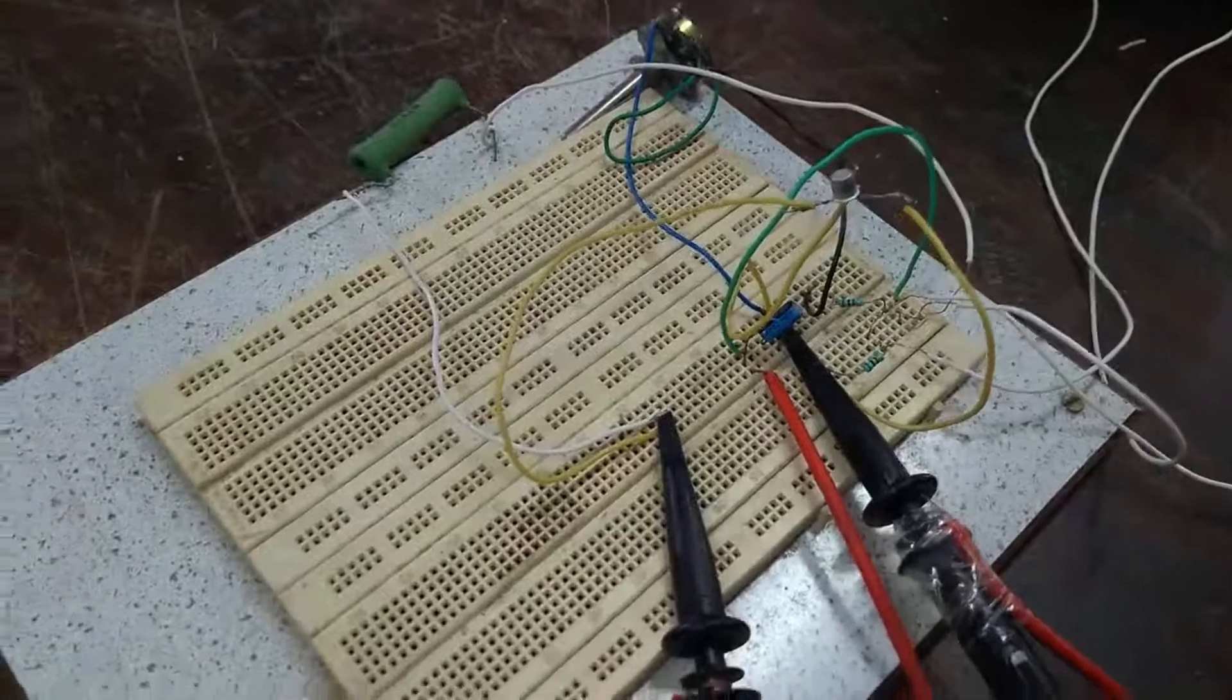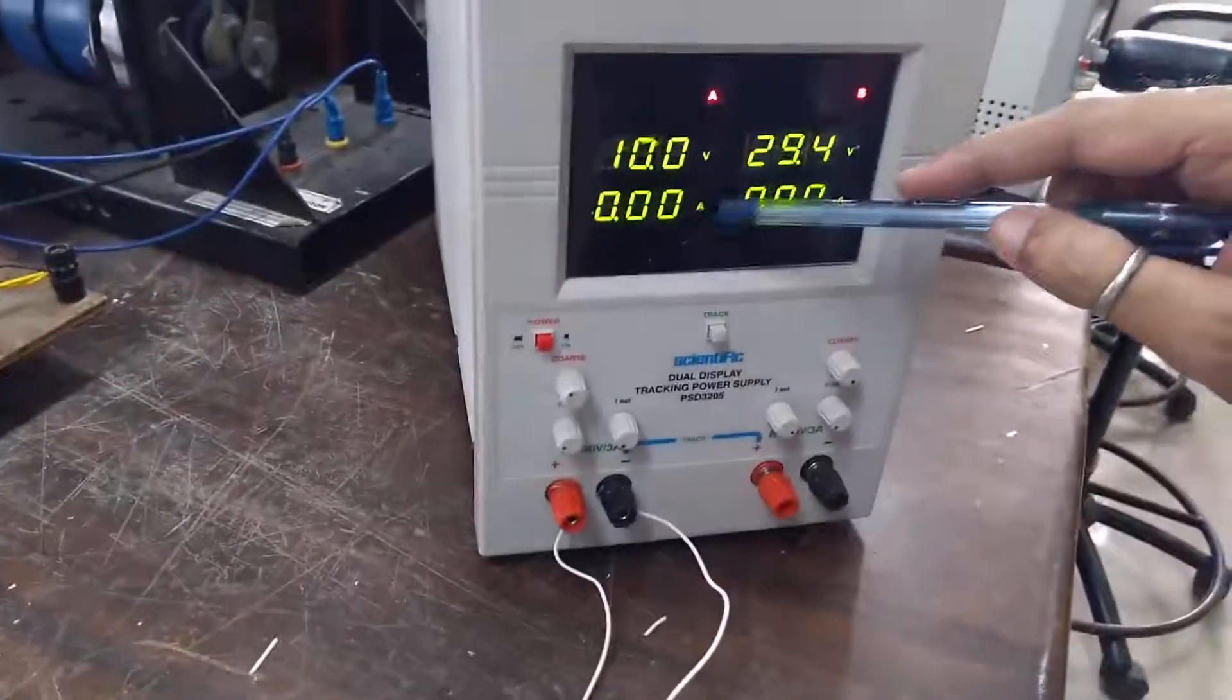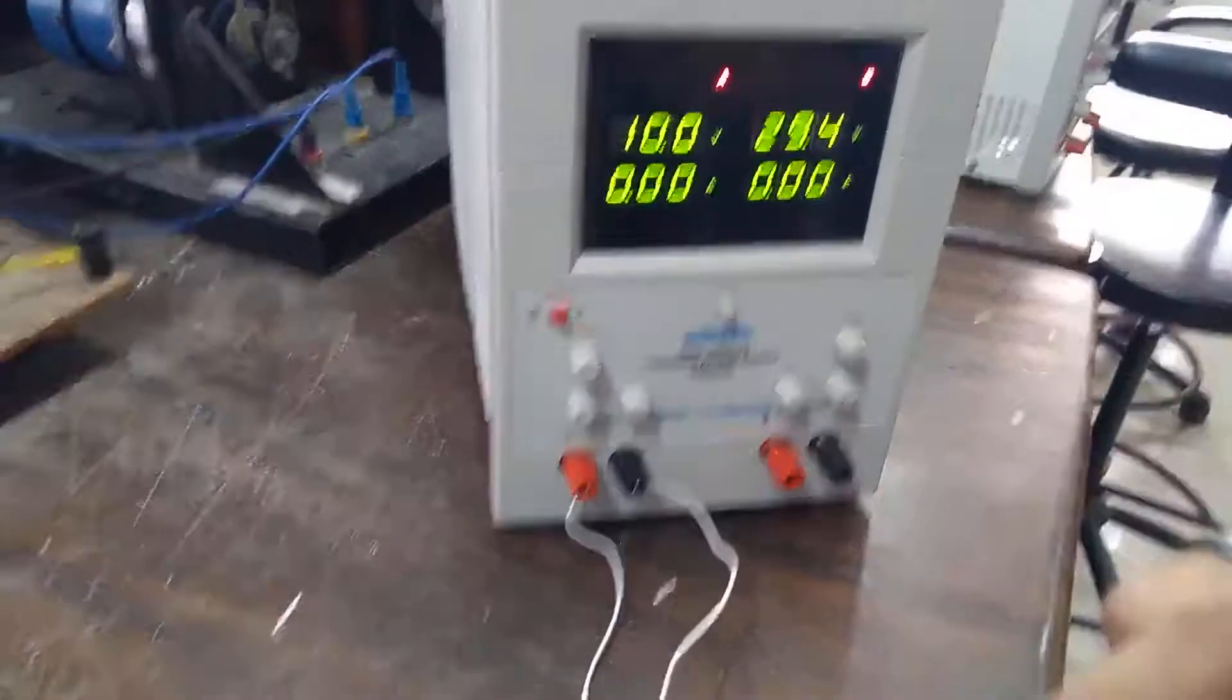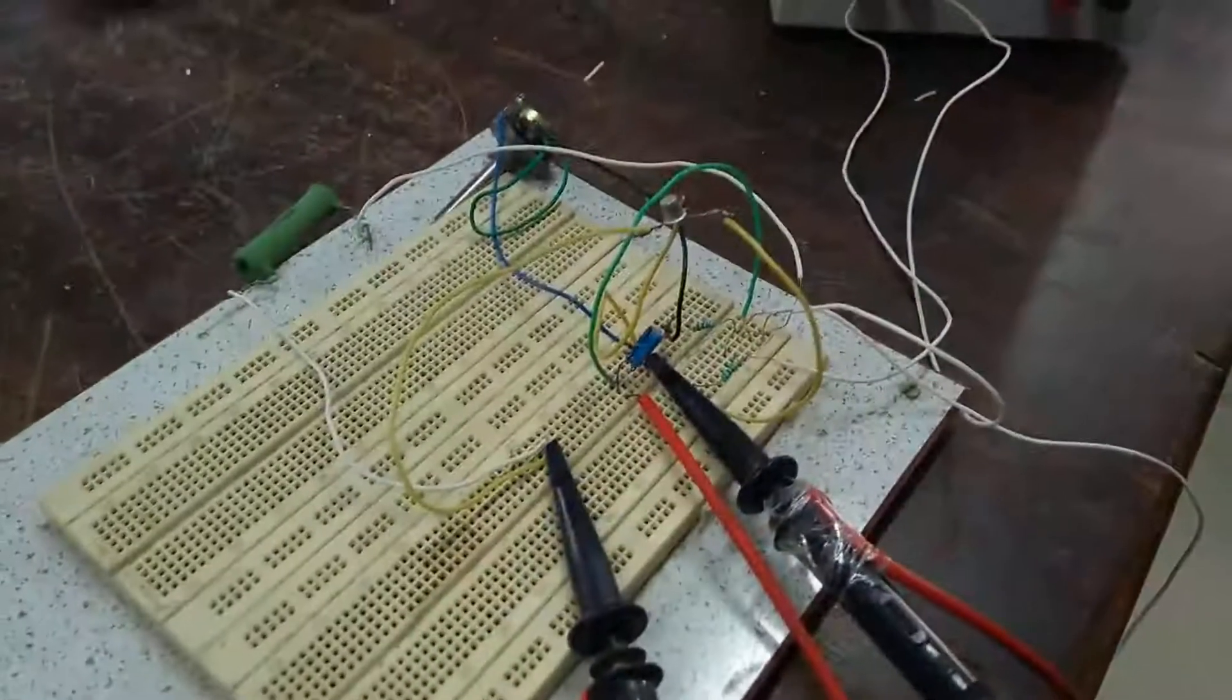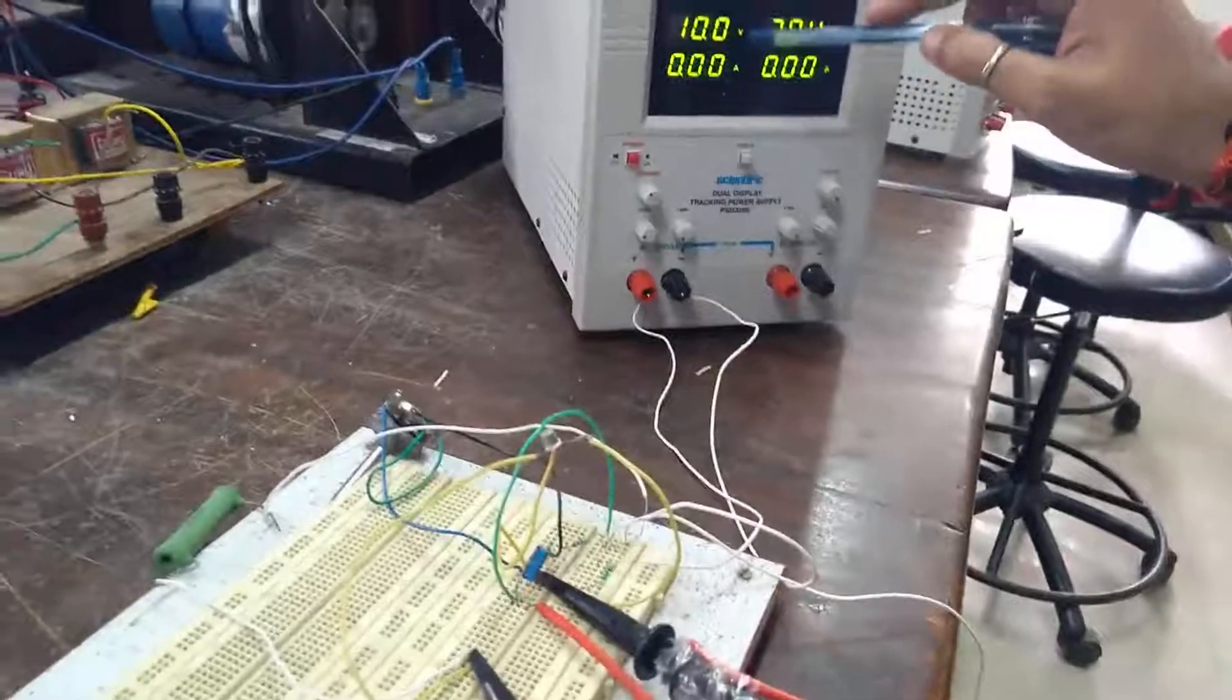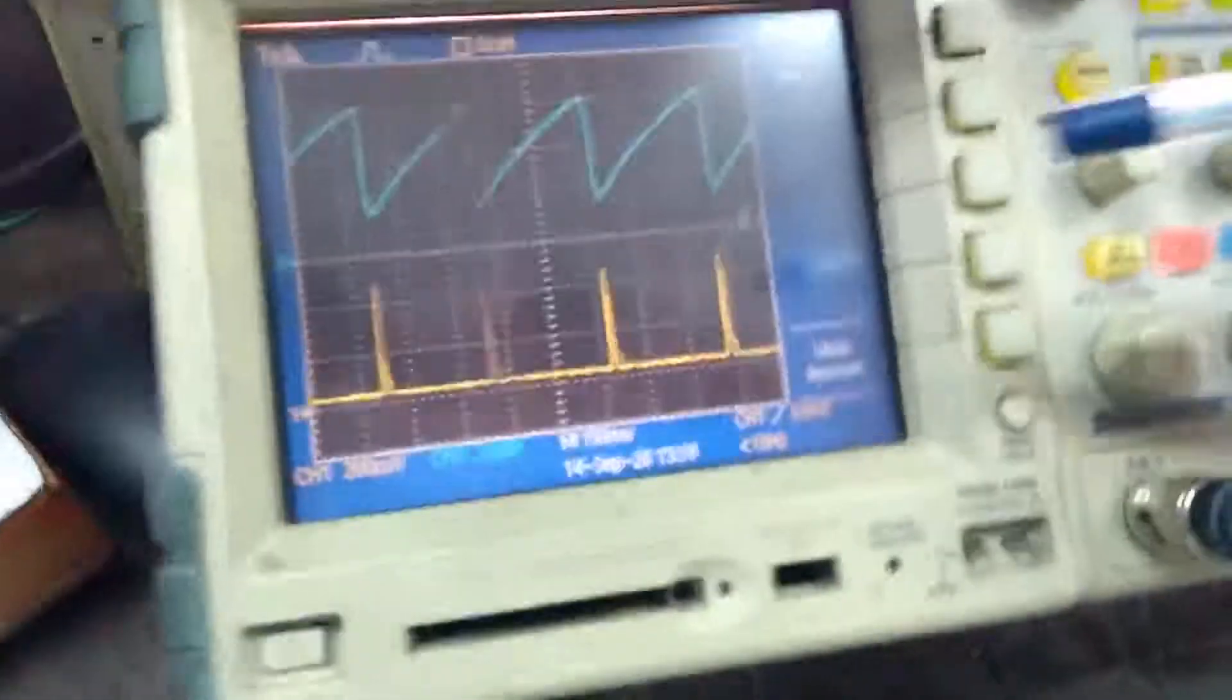Now we are applying this DC 10 volt. We can also apply the 15 volt as per the rating of this UJT, but here for the safety purpose we have applied only the 10 volt across this circuit. And we can now observe what are our waveforms.